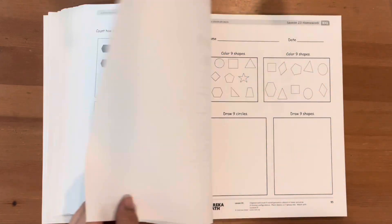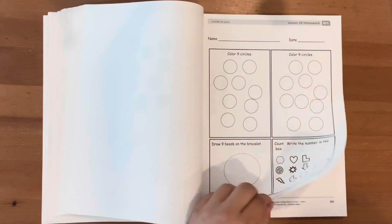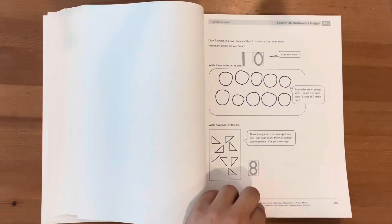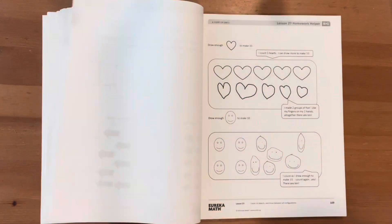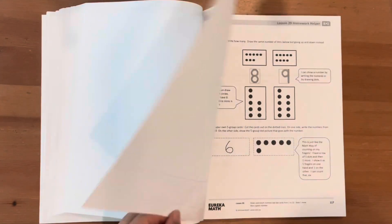Eureka Math workbooks are very affordable. You can find them online from places like Amazon for as low as $3 per workbook or as low as $10 per set for the kindergarten grade level.